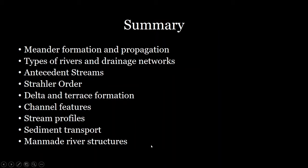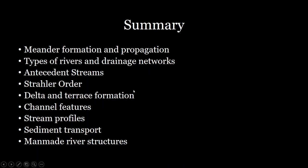That just about covers everything about rivers. In summary, we talked about meander formation and the propagation of meanders, different types of rivers including anastomizing and meandering rivers, drainage networks, antecedent streams and Strahler orders, delta and terrace formations, and different river features such as nick points, stream profiles, sediment transport, and man-made river structures.